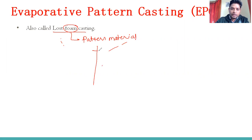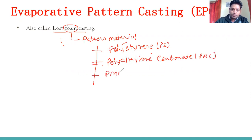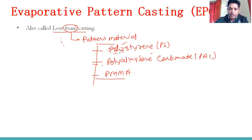There are different types of pattern materials available. A few among them are: polystyrene (PS), polyalkaline carbonate (PAC), and PMMA — that is polymethylmethacrylate. These are not the only ones, but these are the ones generally mentioned in the books.